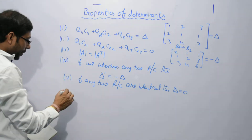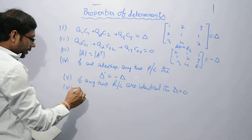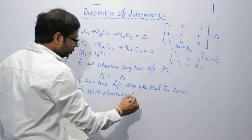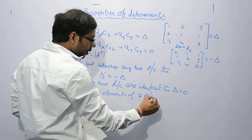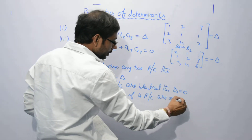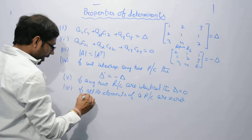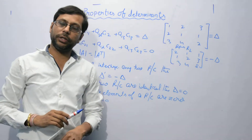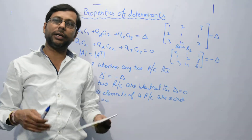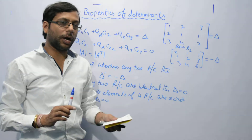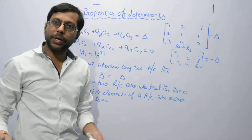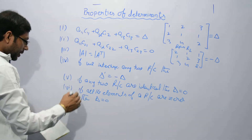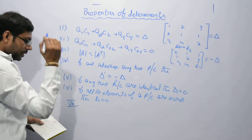Then we move to the next property. The sixth property says: if all the elements of a row or column are zero, then the determinant will be zero. Suppose an entire row is zero — then there is no need to find out that determinant, because that determinant will be zero. This applies to any row or column, both give the same result.